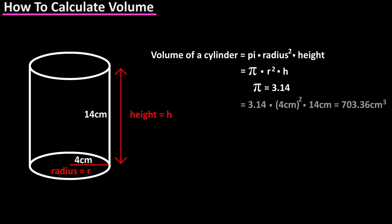From the diagram we have 3.14 times 4 centimeters squared times 14 centimeters. Calculating out, we get 703.36 centimeters cubed. Again, there are 3 centimeters in the multiplication.